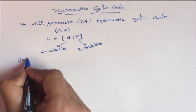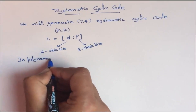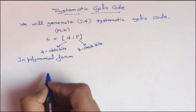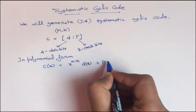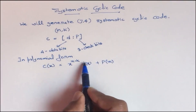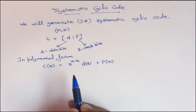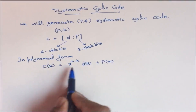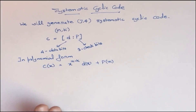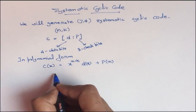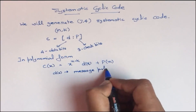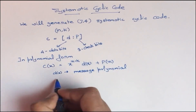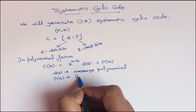In polynomial form, we can write c(x) equal to x to the power n minus k times d(x) plus p(x). Here you see that d(x), the data polynomial, is multiplied with x to the power n minus k. This means it is shifted n minus k bits so that the next bits will be assigned to the check bits. So here d(x) is the message polynomial and p(x) is the parity check polynomial.